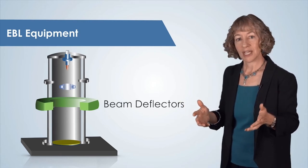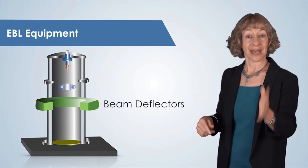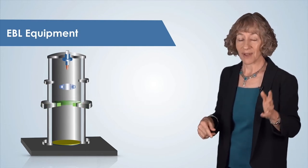Typical beam deflectors can move the beam from one position to another in a matter of nanoseconds. So it's very fast.